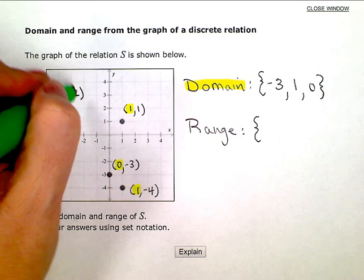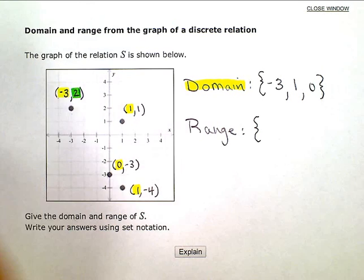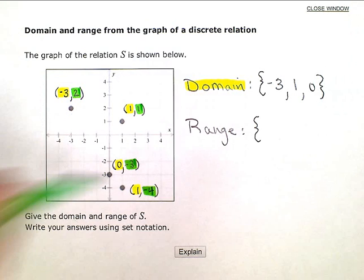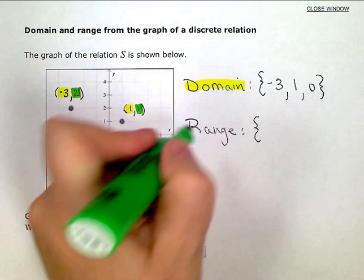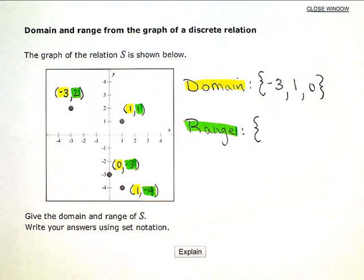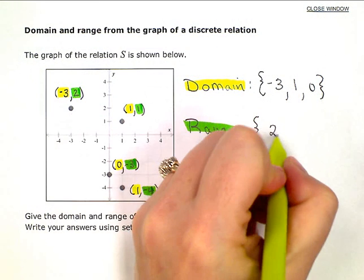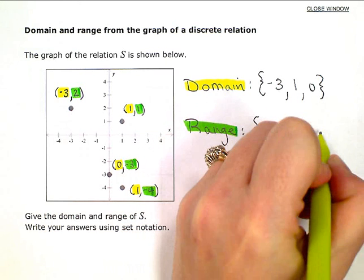So I need to include 2, 1, negative 3, and negative 4 in my range. So 2, 1, negative 3, and negative 4.